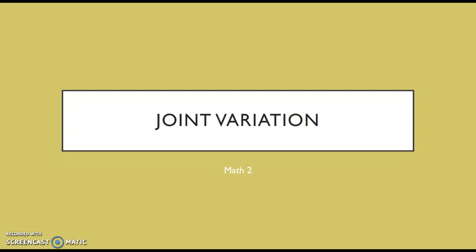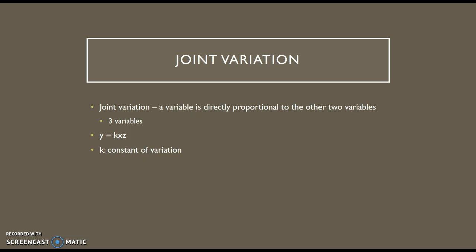Now we're going to keep looking at variation, but look at joint variation. So far we've looked at direct and inverse variation, and now we're going to look at joint, which is actually very similar to direct variation.